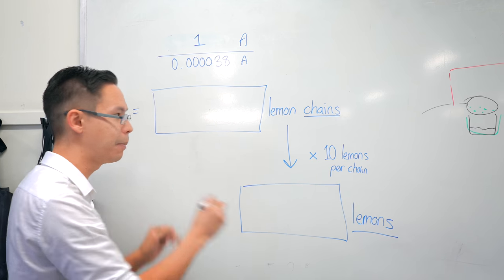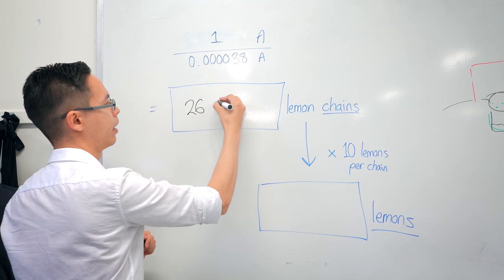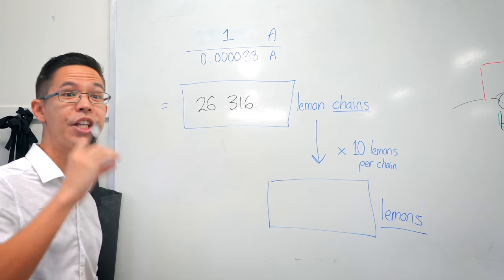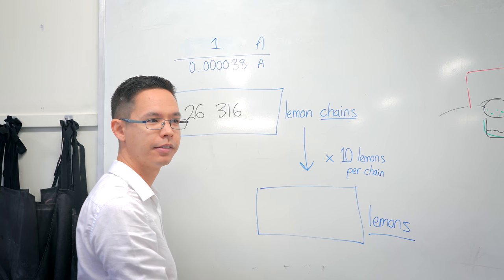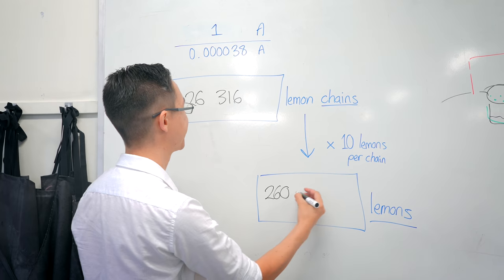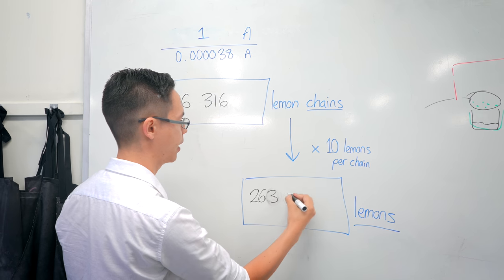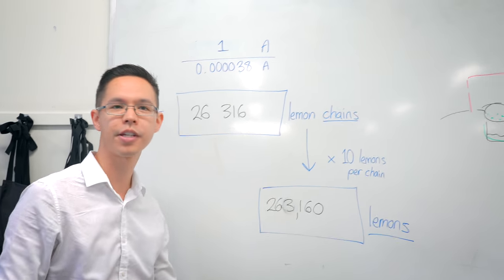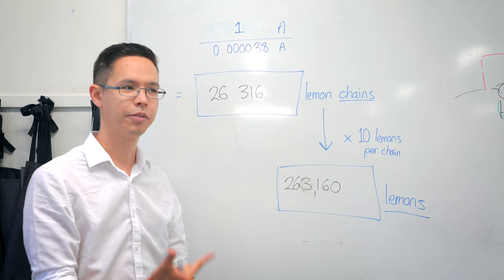And the answer of how many lemon chains we would need would be 26,315 chains of lemons. And if each chain is 10 beakers, or 10 lemons, times that by 10, we would need 260,000. Oh no, no, no, that's bad multiplication here. 3, 1, 6, 0. So 263,160 lemons to have enough voltage and enough current to charge an iPhone.